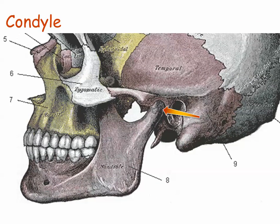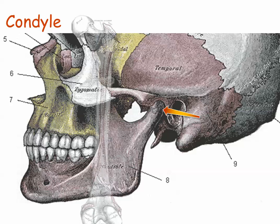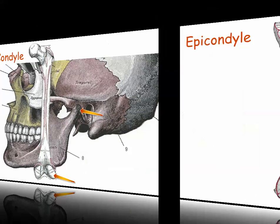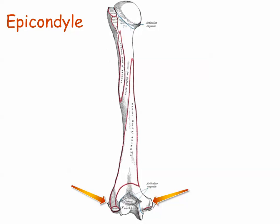A condyle is a rounded bump that usually fits into a fossa on another bone to form a joint; condyle literally means knuckle. An epicondyle is a bump near a condyle, often giving the appearance of a bump on a bump. An epicondyle is usually for muscle attachment, not for direct connection to another bone; epicondyle literally means upon a knuckle.